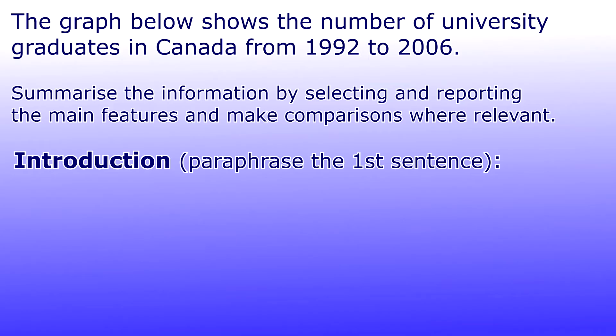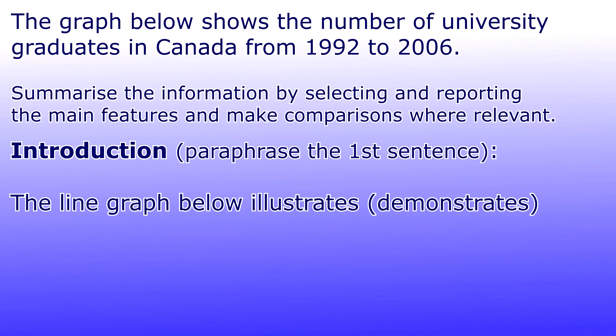For example, 'graph' is still a graph, 'bar' is still a bar. Instead of 'shows' you can write 'demonstrates', 'illustrates', or 'gives information about'. So let's write: 'The graph below illustrates the number of university graduates in Canada.'